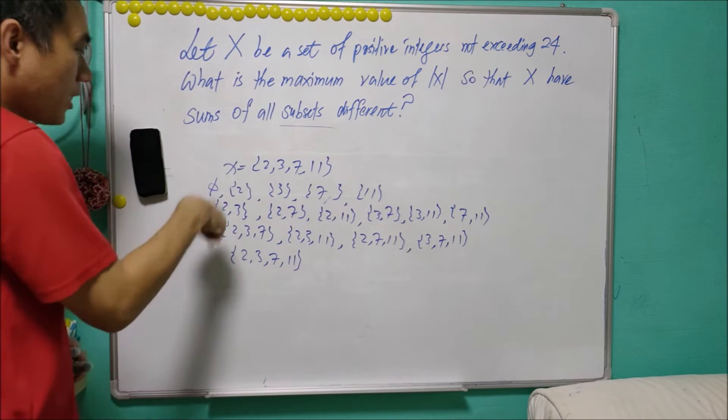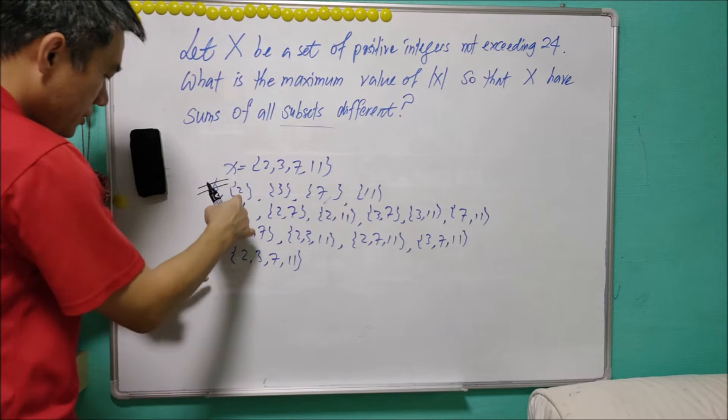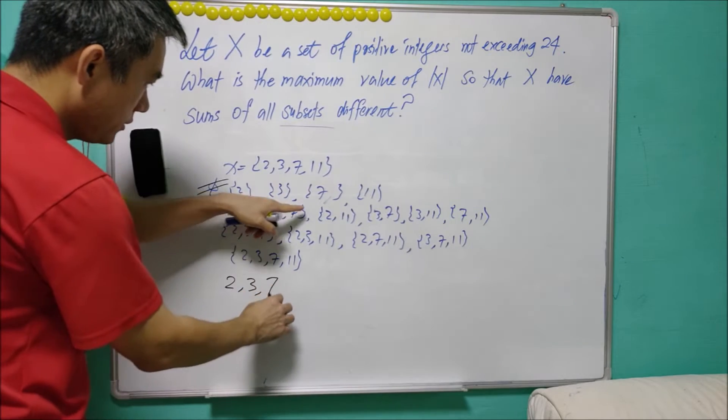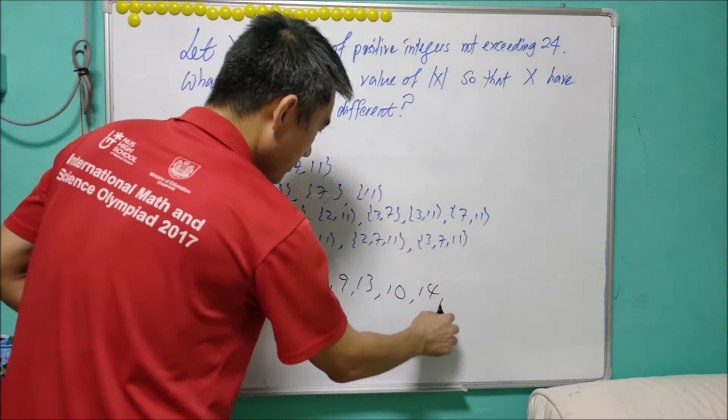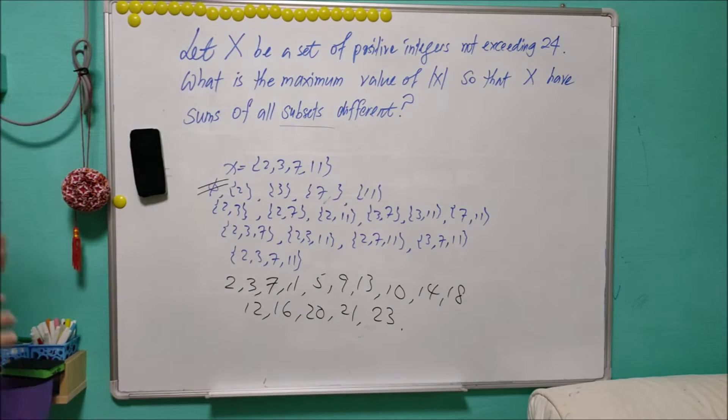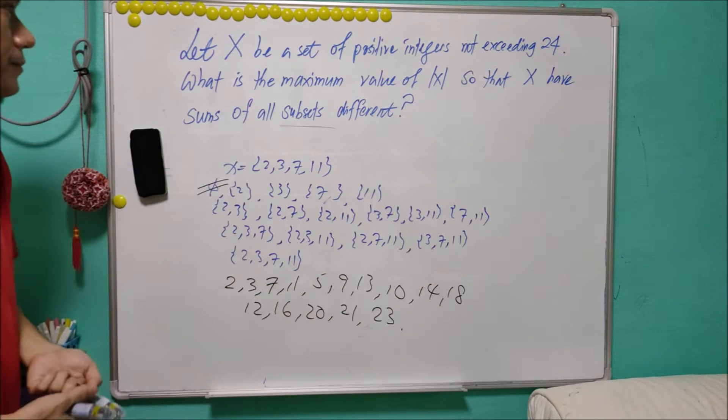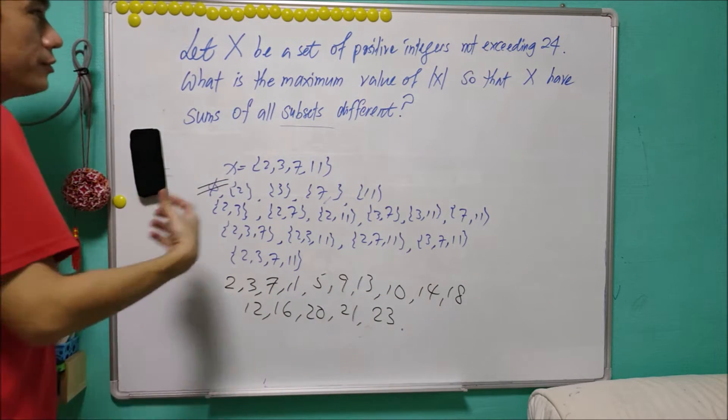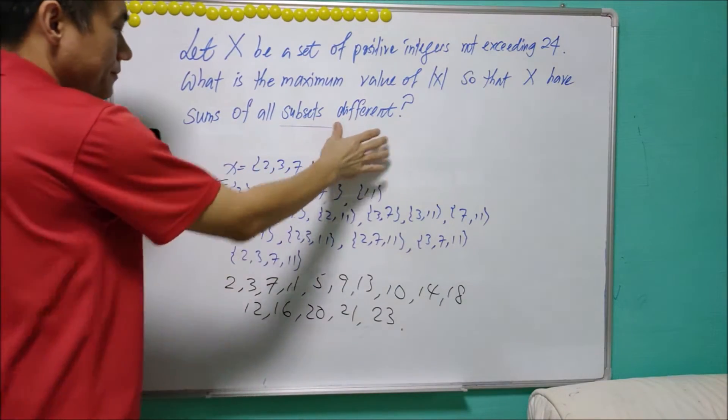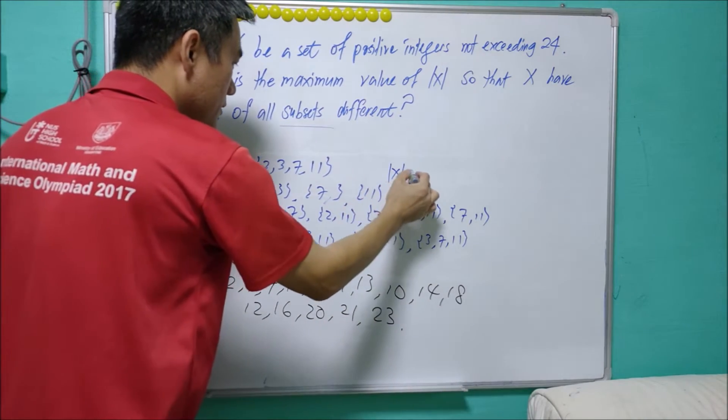For each subset, we are going to calculate the sum. We will exclude the empty set and start from here. This will give us 2, 3, 7, 11, and so on. Note that in this case, none of the sums are the same, so it actually fulfills the condition that X has sum of all subsets different. And in this case, |X| is equal to 4.